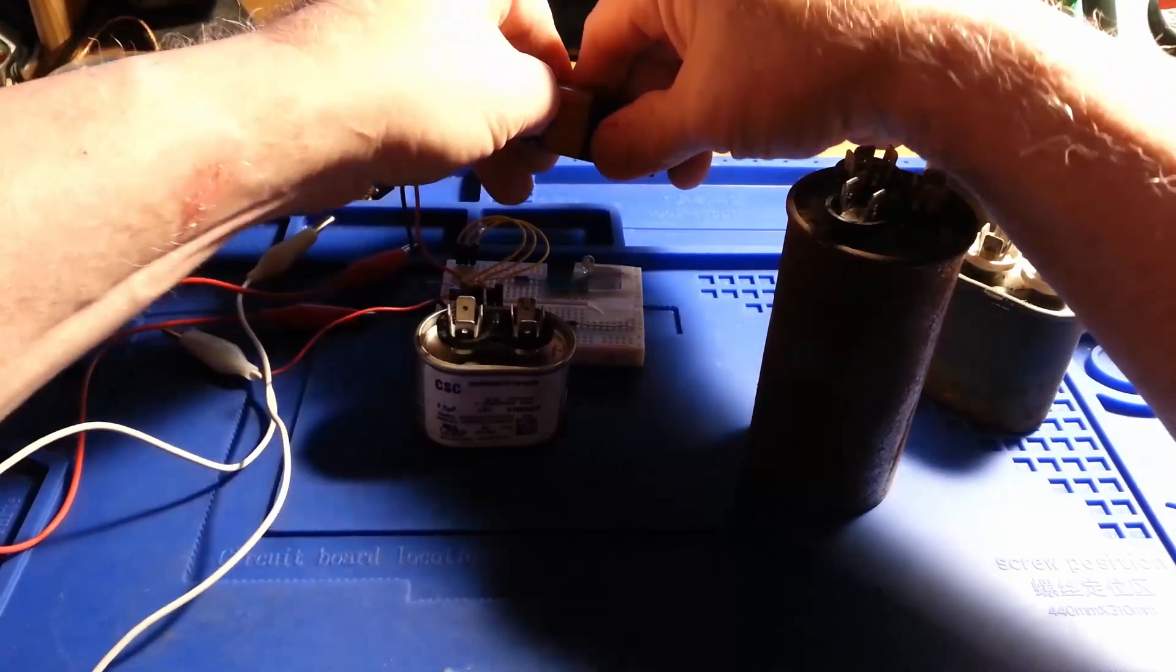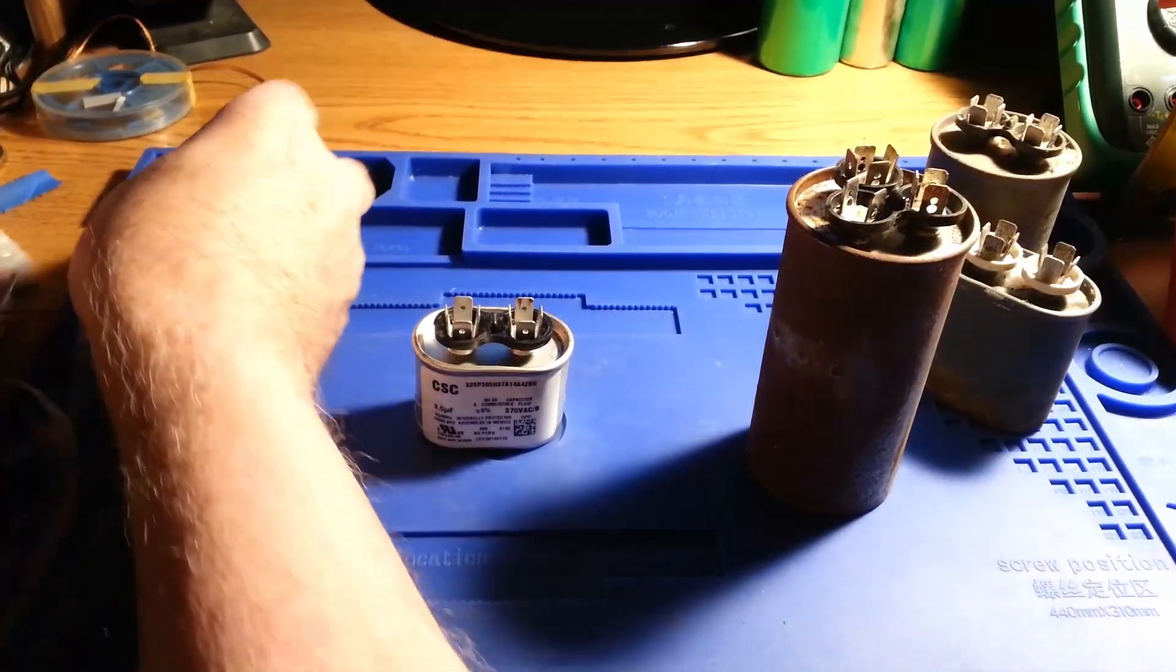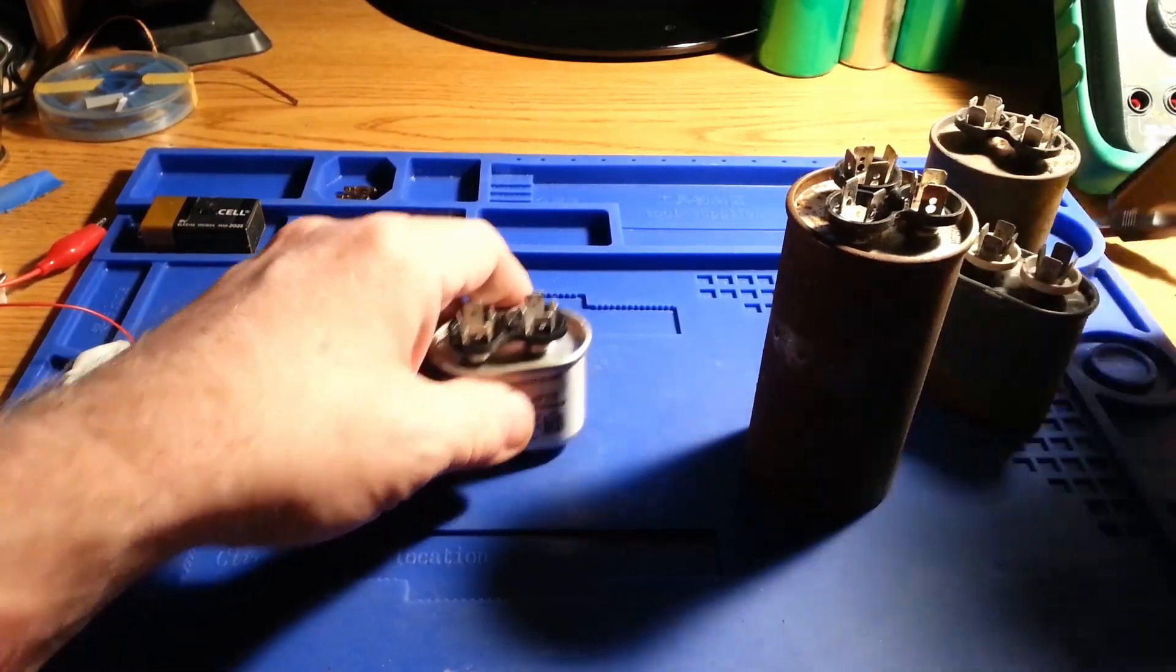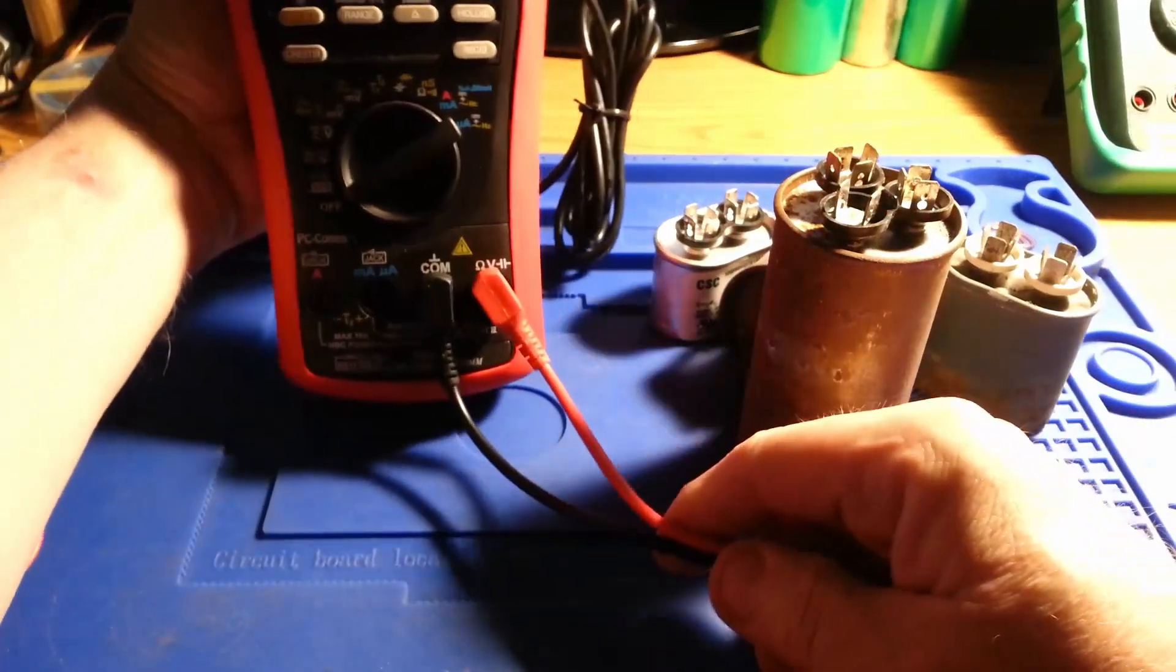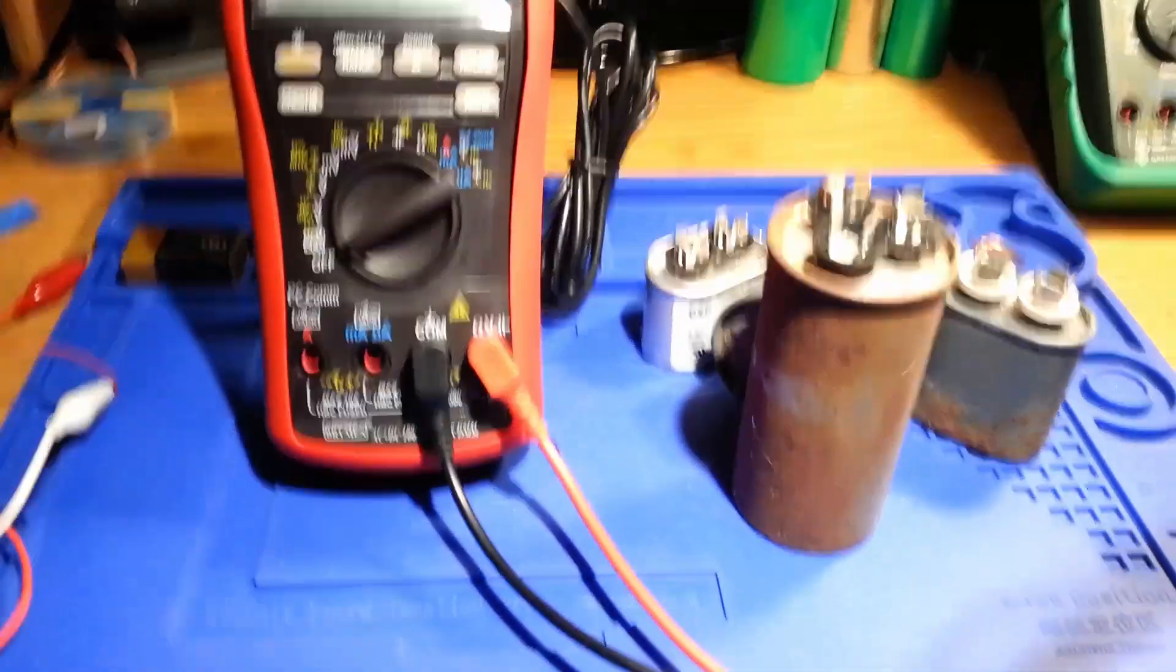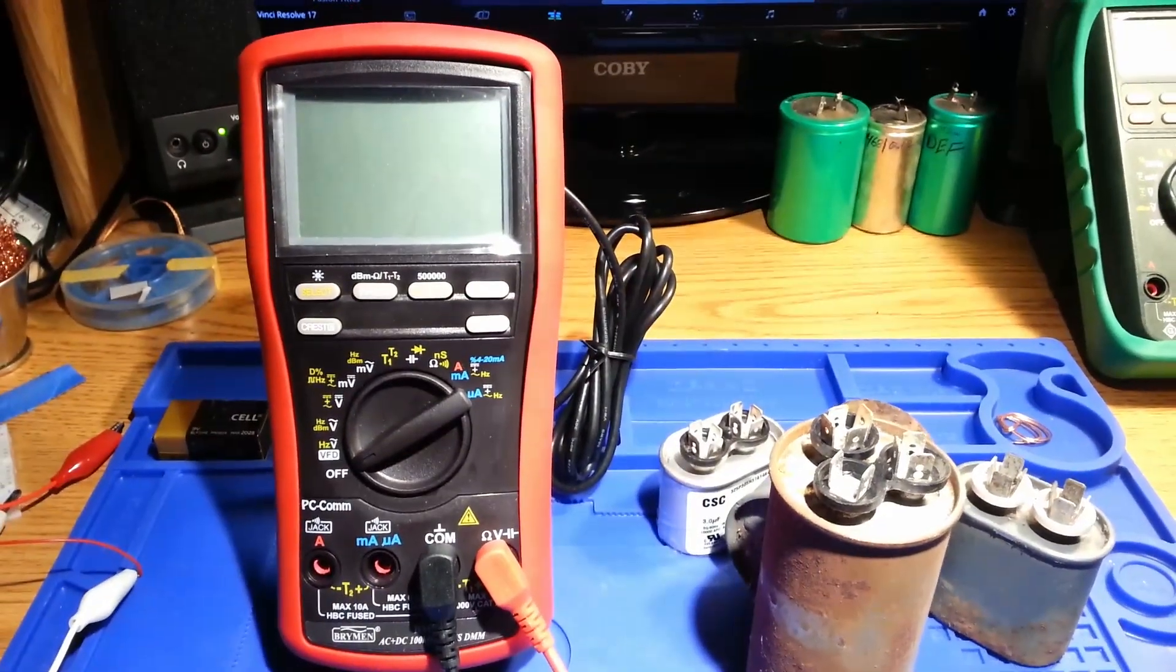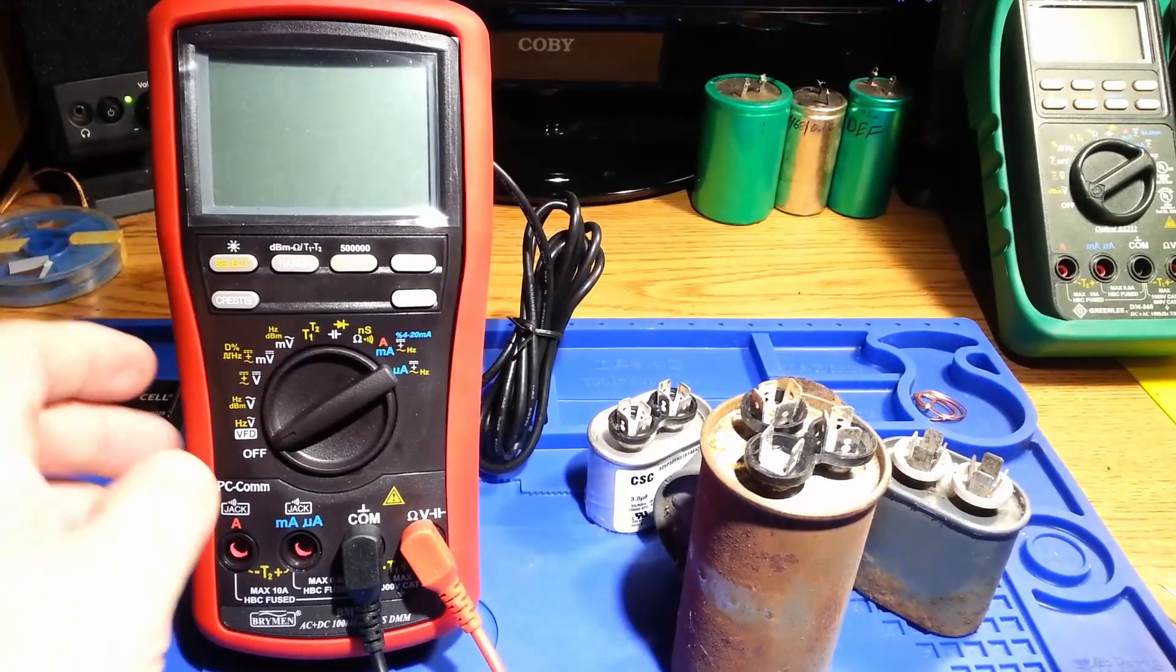I was going over some stuff in videos before as far as using some meters for conductance. And my new Brymen that I have, some Fluke 80 series meters, plus some of the older 80 series meters have a conductance function built into them as well, the bench top and handheld digital multimeters.